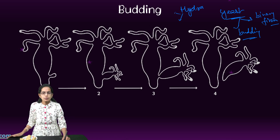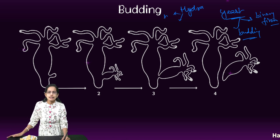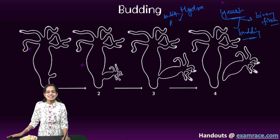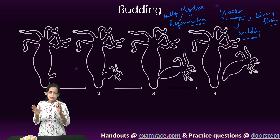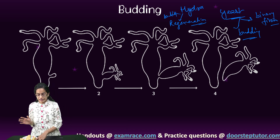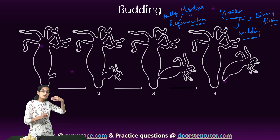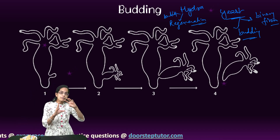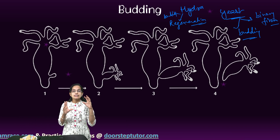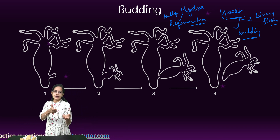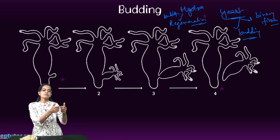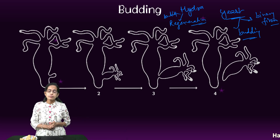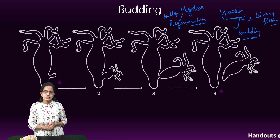Hydra also reproduces by two important methods: budding, which we are covering now, and regeneration, which we will understand shortly. The process of budding is a form of vegetative propagation where symmetrical cells are formed, resulting in a symmetric division and the formation of a new organism.